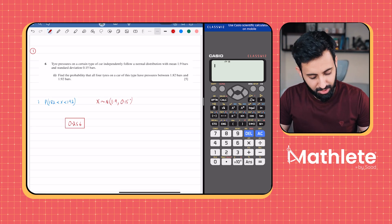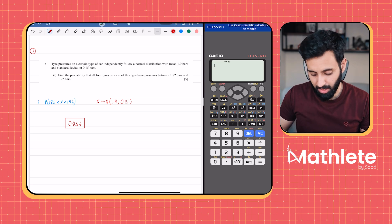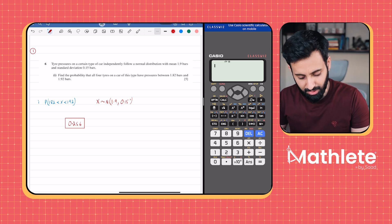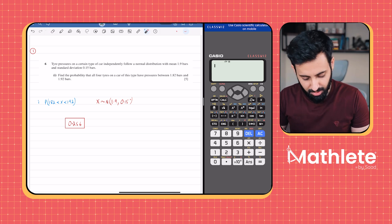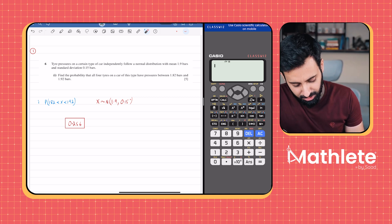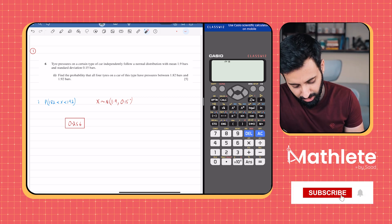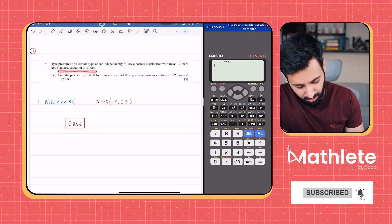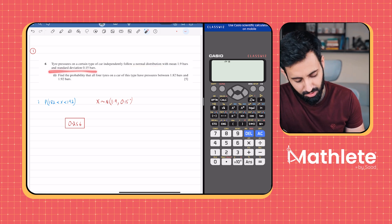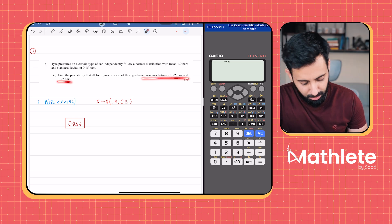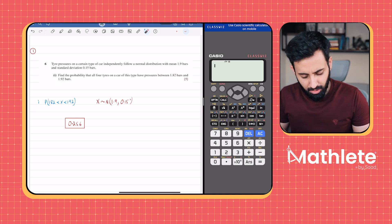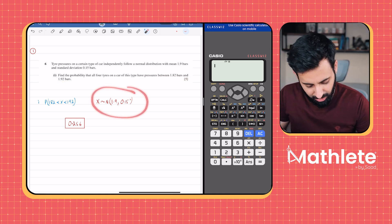Here I have a normal distribution question, the first part is of five marks and we're going to see how we can use our calculator. Let's read the question, extract important pieces of information, and then start plugging in the values. Tire pressures on a certain type of car independently follow a normal distribution with mean 1.9 bars and standard deviation 0.15 bars. Find the probability that all four tires on a car of this type have pressures between 1.82 bars and 1.92 bars.